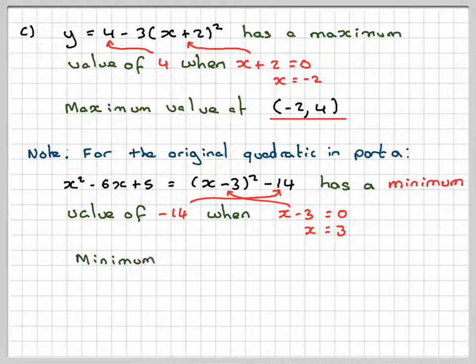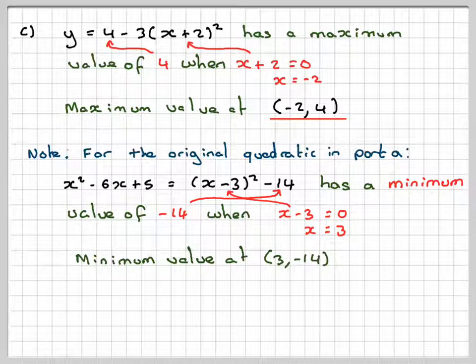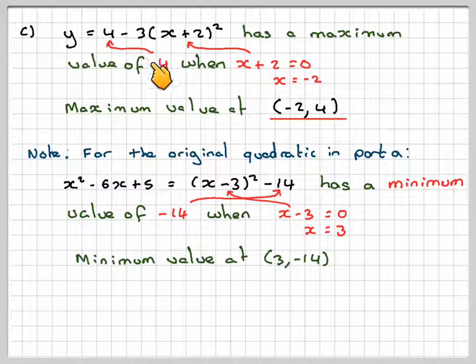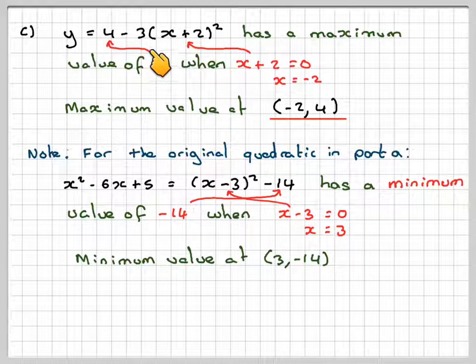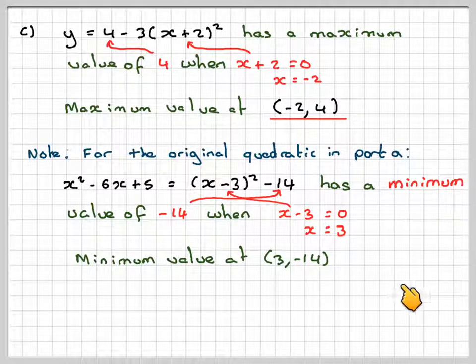So the coordinates of the minimum point is (3, -14). Now, you know from your quadratics where x² is positive, it will look like that, there will be a minimum point. In here, the x² bit will be negative, so that will be like that. So you're going to get a maximum here and a minimum here.